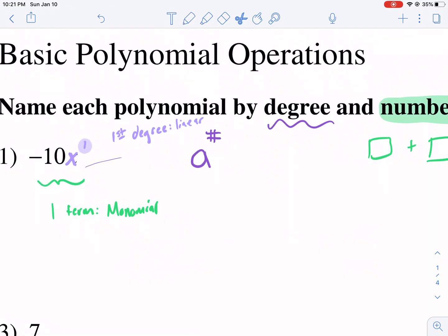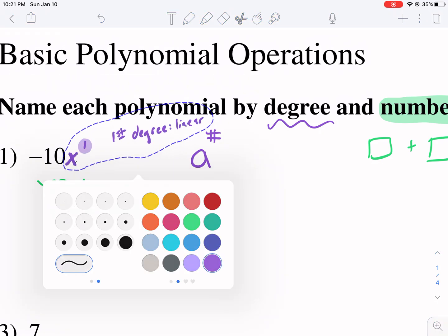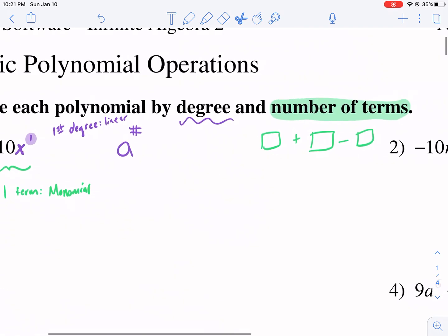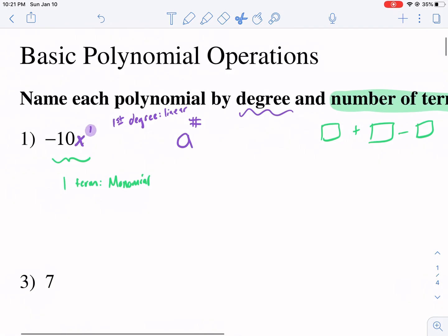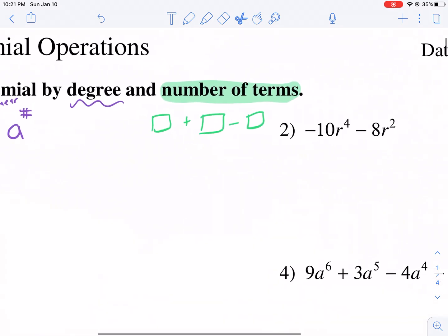So this is a first degree polynomial. And these have a special name, they're called linear. So if it's a first degree polynomial, it is linear. That is a first degree and it's a one term polynomial, meaning it's a monomial that's linear.